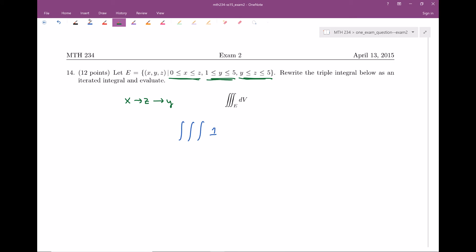I believe that we should do dx first, then dz, then dy. Let's set that up. For my X integral, it goes from zero to Z. For my Z integral, it goes from Y to five. And for my Y integral, it goes from one to five. So there is the setup. We've written this triple integral as an iterated integral.